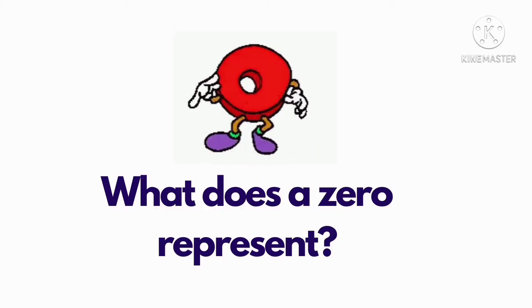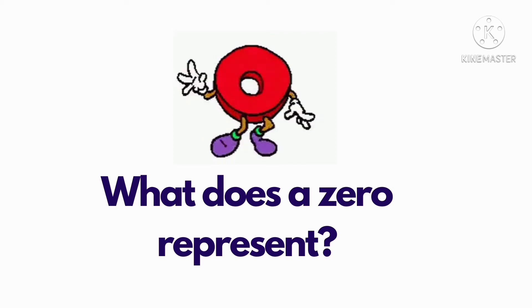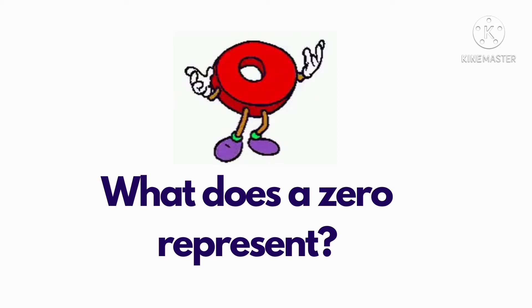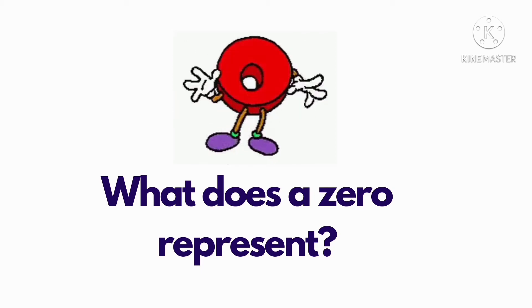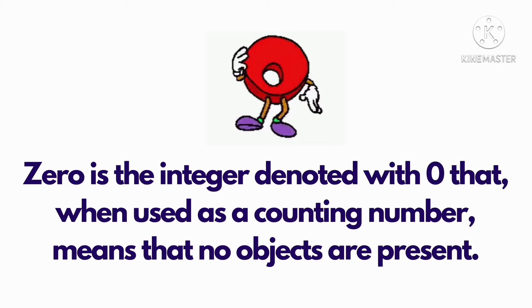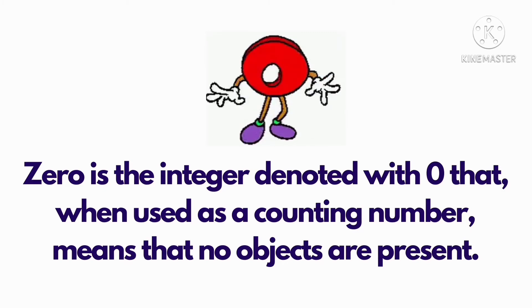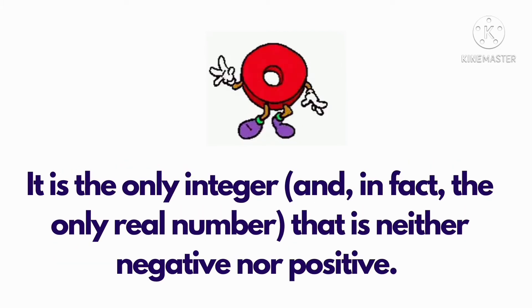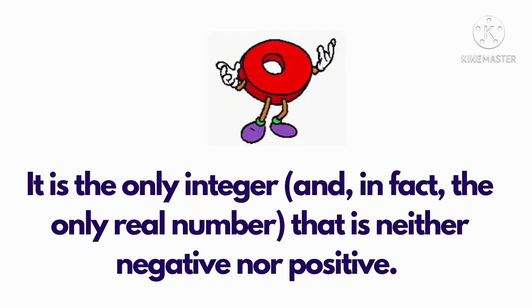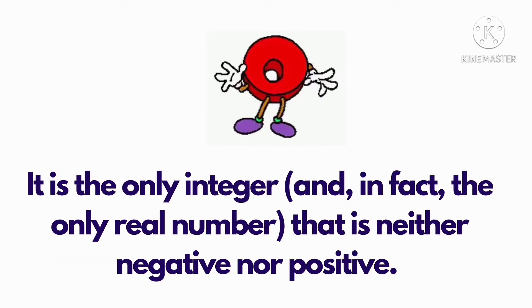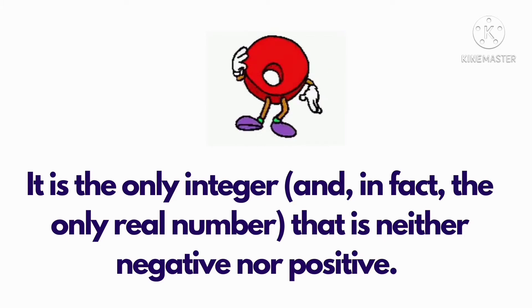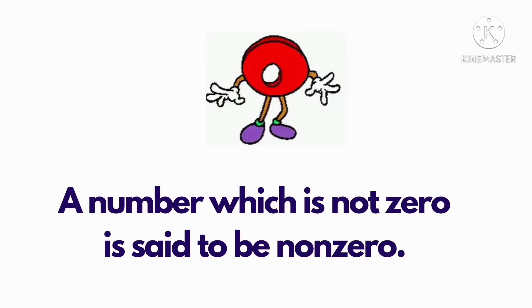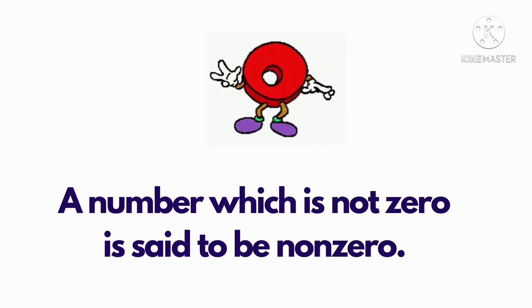What does zero represent? Zero is the integer that, when used as a counting number, means that no objects are present. It is the only integer that is neither negative nor positive. A number which is not zero is said to be non-zero.